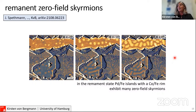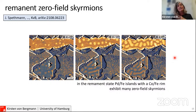However, these cannot be isolated — a single skyrmion would just strip out — so they can only exist as an ensemble. For applications it would be nice to have isolated single magnetic skyrmions in zero magnetic field, and this is the topic of the next chapter of my talk.